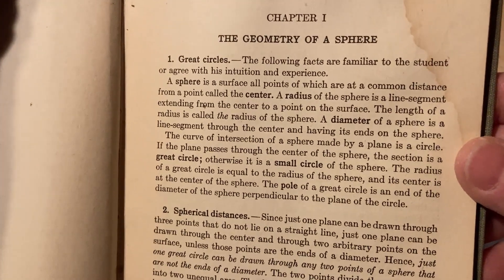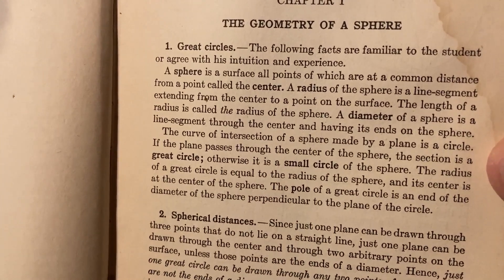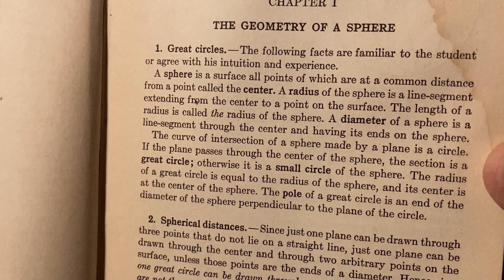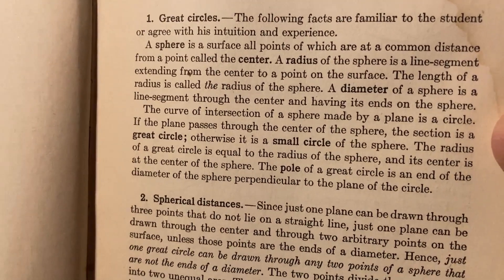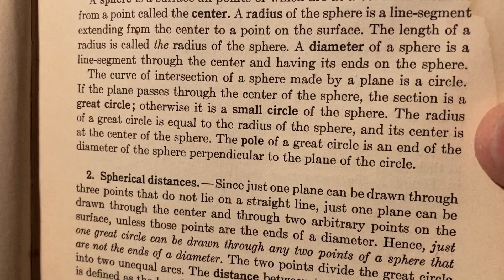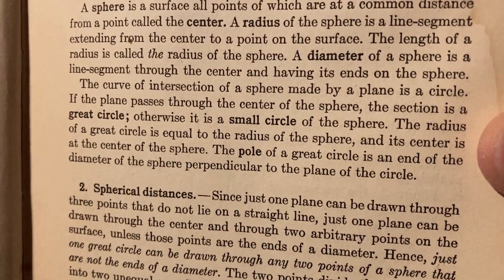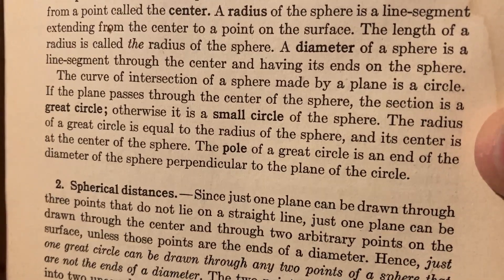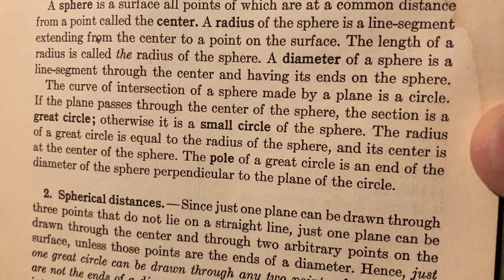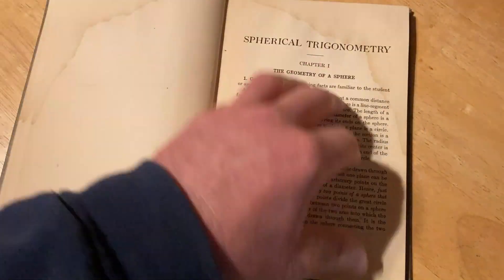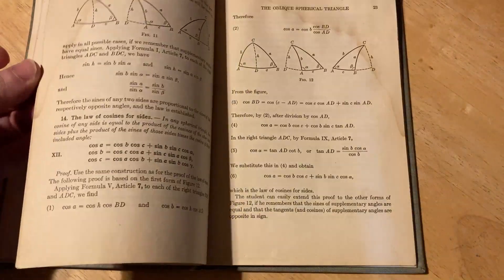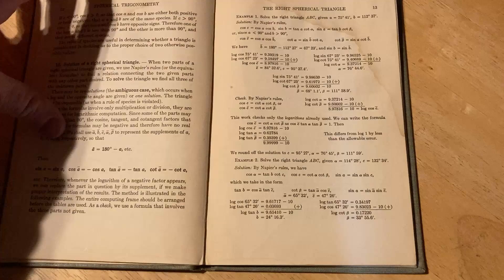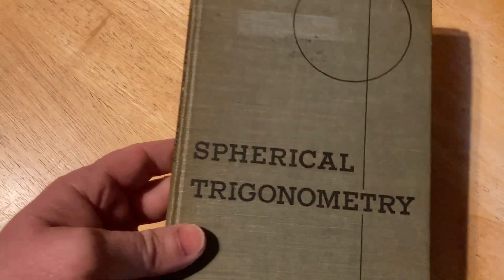Looks like someone spilled water or coffee on this book. Let me show you the intro because it's actually a pretty good book. Great circles. The following facts are familiar to the student or agree with his intuition and experience. A sphere is a surface, all points of which are at a common distance from a point called the center. A radius of the sphere is a line segment extending from the center to a point on the surface. The curve of intersection of a sphere made by a plane is a circle. If the plane passes through the center of the sphere, the section is a great circle. Otherwise, it is a small circle of the sphere. That's the definition of a great circle. In theory, you could buy a book, maybe this book or another book on spherical trigonometry, and you could learn it. It's something that is accessible to most people. If you've had some math and you know some basic trig, you could study this stuff and learn this mysterious subject.